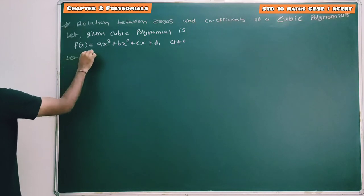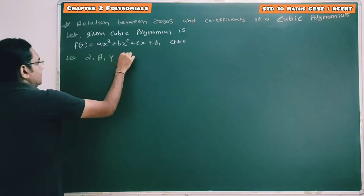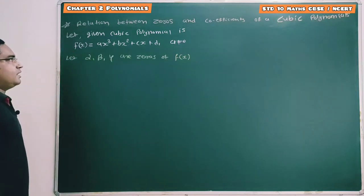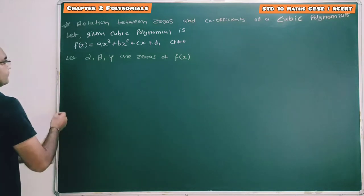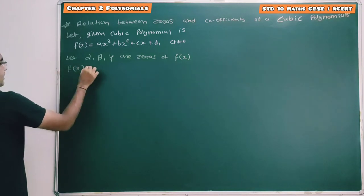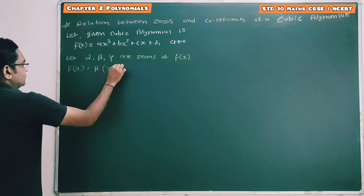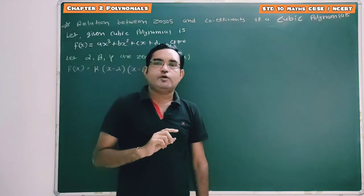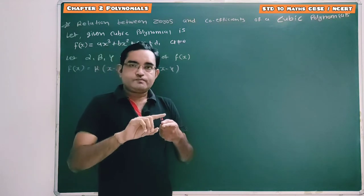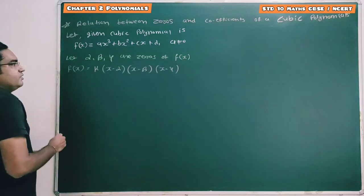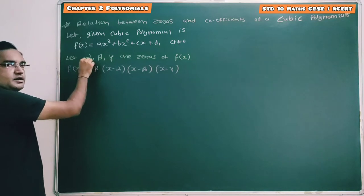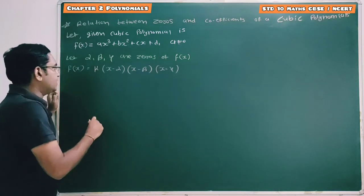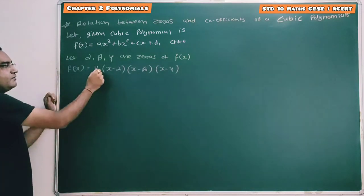Now, let's say that alpha, beta, and gamma are zeros of polynomial f of x. Then alpha, beta, and gamma are the zeros of the cubic polynomial. So, by the factor theorem, we can say that x minus alpha, x minus beta, and x minus gamma are factors of this given polynomial.